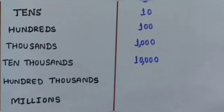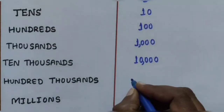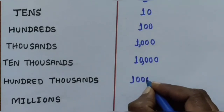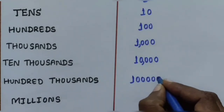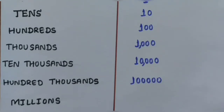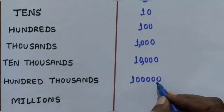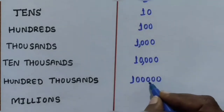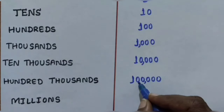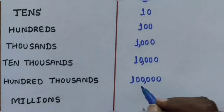Next is Hundred Thousands, written as 1,00,000 - one followed by five zeros. The first comma is applied after the hundreds place, meaning 3 digits from the right side: Units, Tens, Hundreds (comma), Thousands, Ten Thousands, Hundred Thousands.